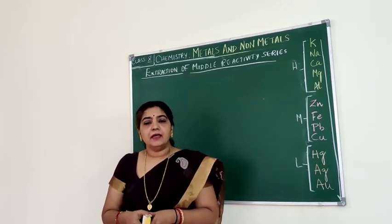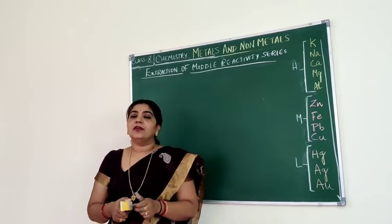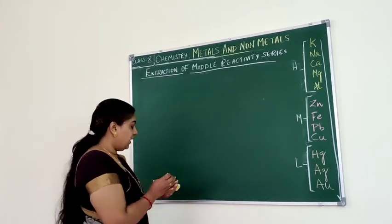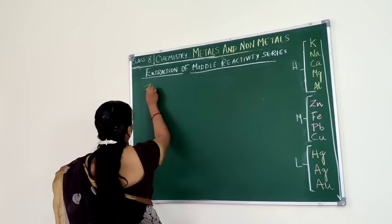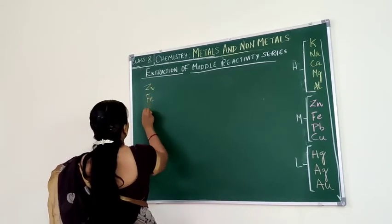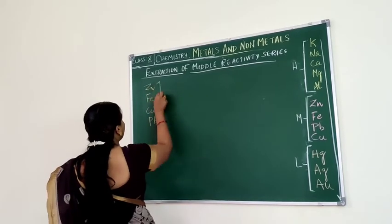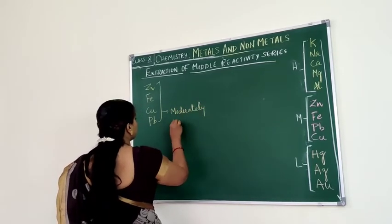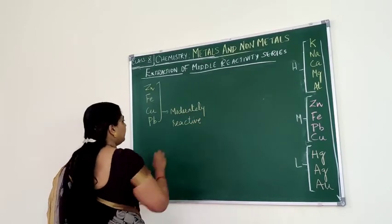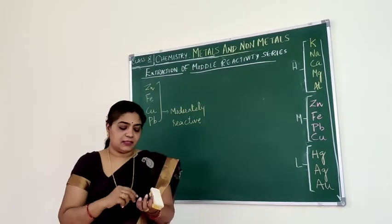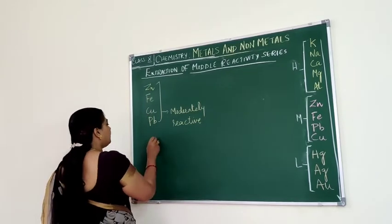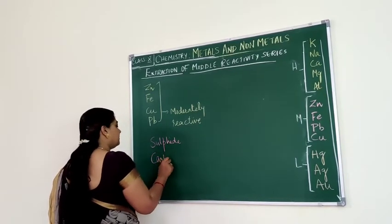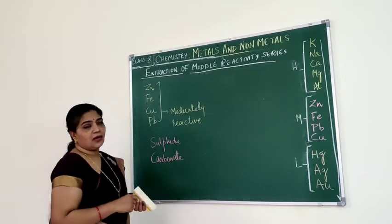These metals — zinc, iron, copper, and lead — are moderately reactive. The ores of these metals are usually present as sulphide ore or carbonate ore.